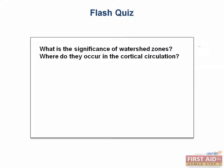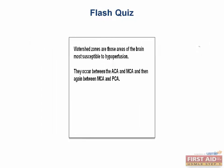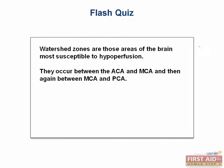What is the significance of watershed zones? Where do they occur in the cortical circulation? Watershed zones are those areas of the brain most susceptible to hypoperfusion, and they occur between the ACA and MCA, and then again between the MCA and the PCA.